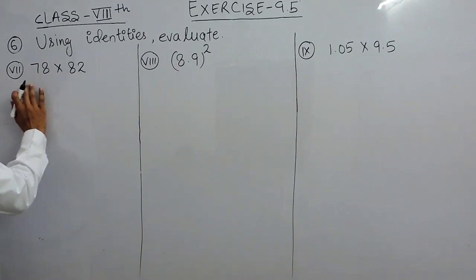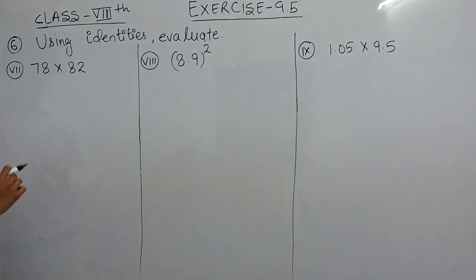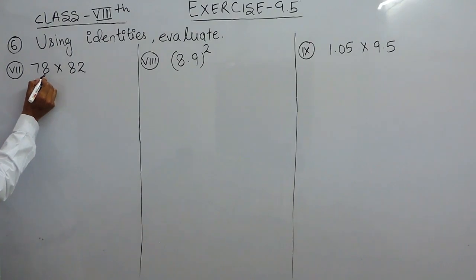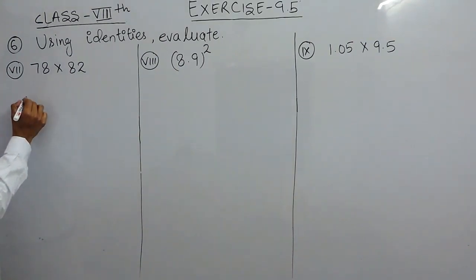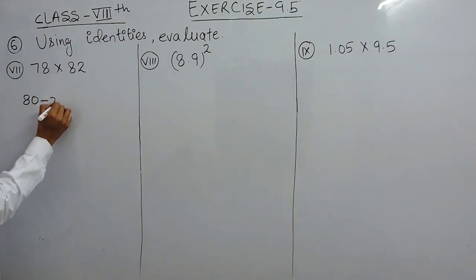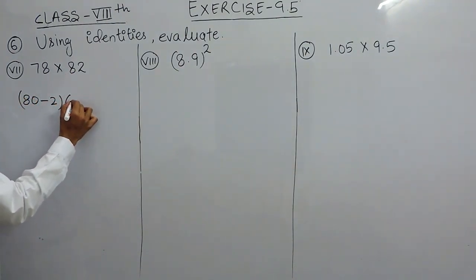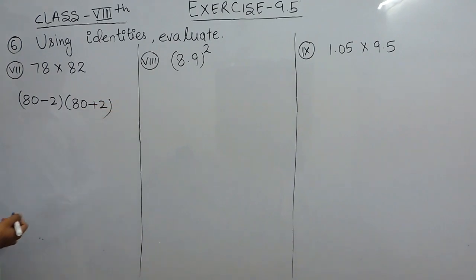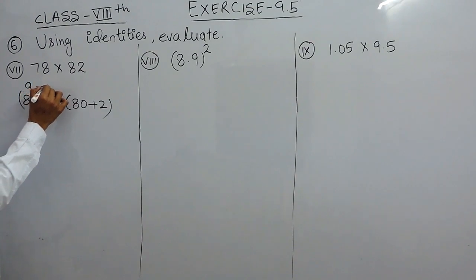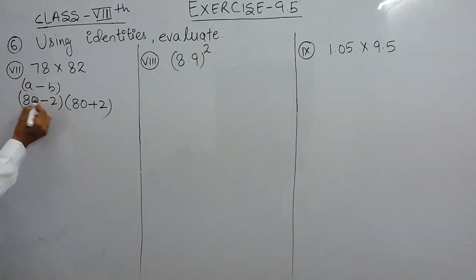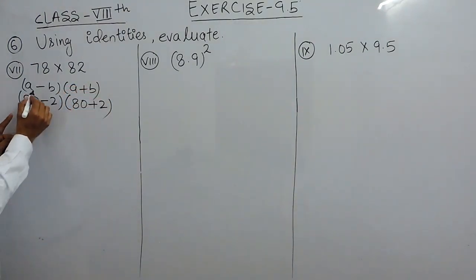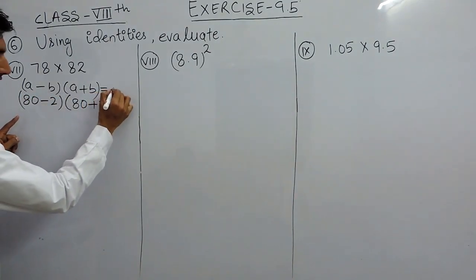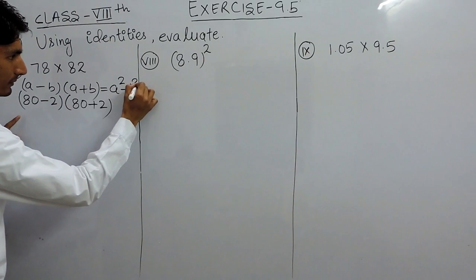Again there is no square. If I see this number, it is close to 80 and this is again close to 80. So this number can be written as 80 minus 2 and this number can be written as 80 plus 2. If I consider 80 as a and 2 as b, this is a minus b and this is a plus b. We know that (a minus b) into (a plus b) equals a square minus b square.